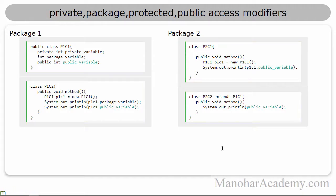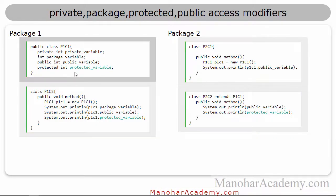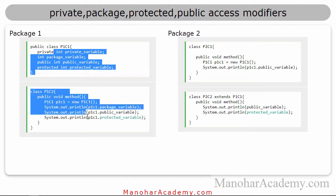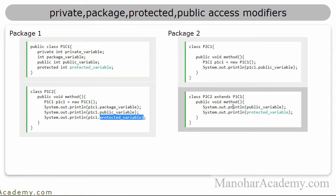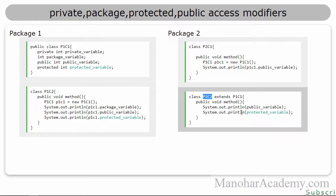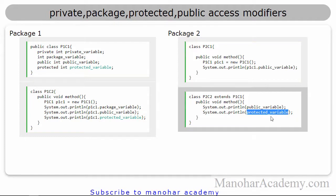Coming to protected — the new one we are learning in this lesson — the protected variables are available in the same package, so you can see this variable can be accessed here. Also, they are available to subclasses in different packages. For that reason, in the P2C2 class, I am able to access this protected variable directly, because it is inherited from P1C1 and it is visible, so I can print it directly.